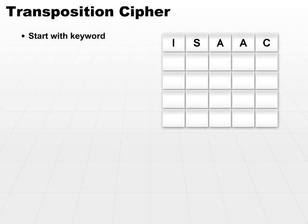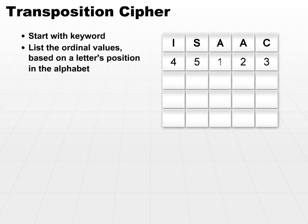The first thing you'll do is list the ordinal values based on the letter's position in the alphabet. Now, since I use the word Isaac, I'll put that in the first row of my table. In the second row of my table, I'll put the ordinal values.